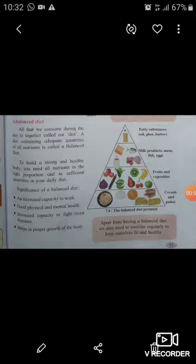Here is the balanced diet pyramid. It includes cereals and pulses, fruits and vegetables, milk products, meat, fish, and eggs, then fatty substances such as oil, ghee, and butter. Apart from having a balanced diet, we also need to exercise regularly to keep ourselves fit and healthy.